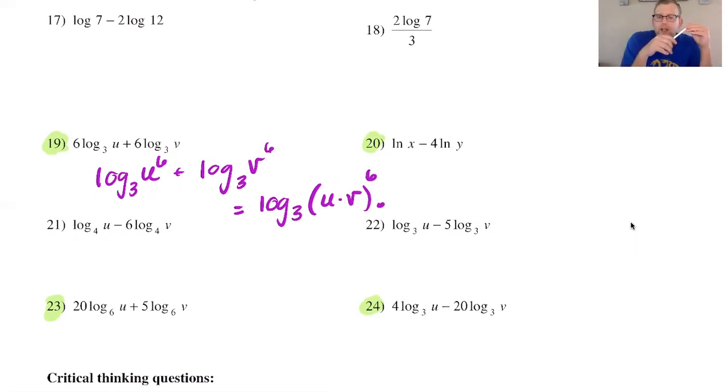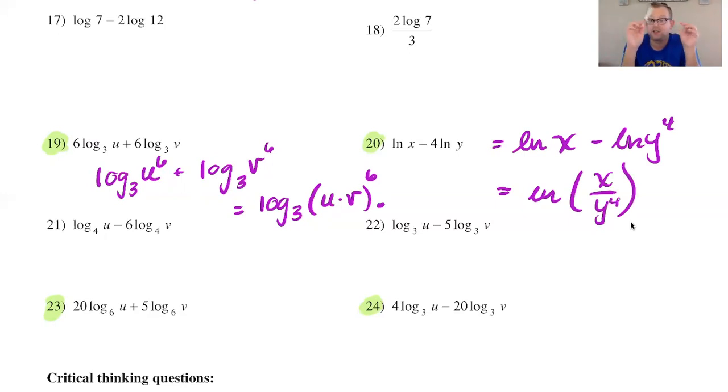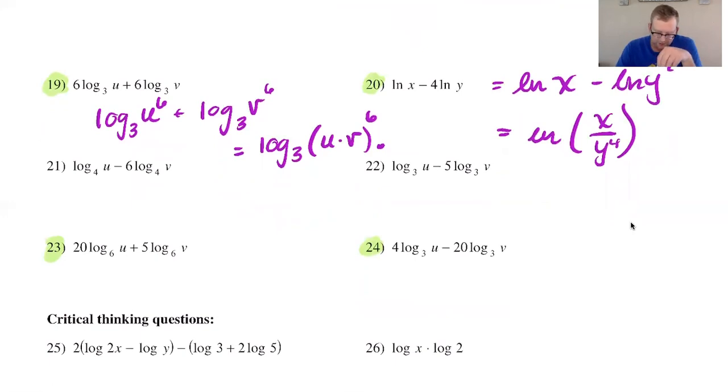And number 20 we have the natural log of x minus four times the natural log of y so let's go ahead and do this first. I have the natural log of y to the fourth and since this is a difference of two natural logs we will have the natural log of x over y to the fourth. You'll notice that when I do natural log my l kind of gets a little cursive-y and I don't do it for log for some reason. I think it's because in my background the use of natural log is so prevalent that I would just copy my professor and my teacher's writing which is a lot of time in cursive so the natural log stays that way.